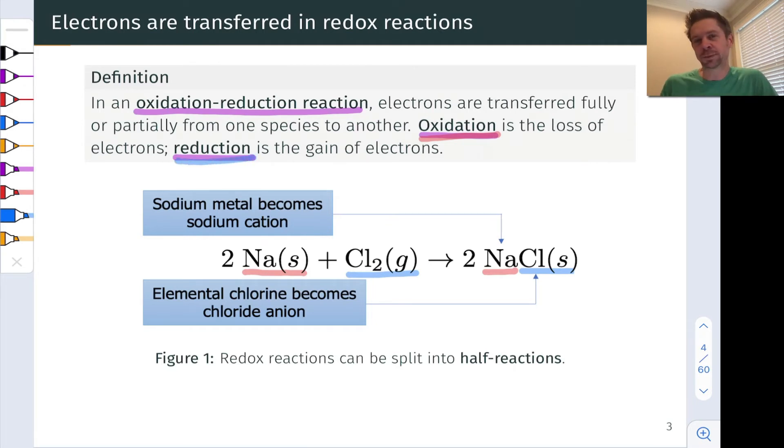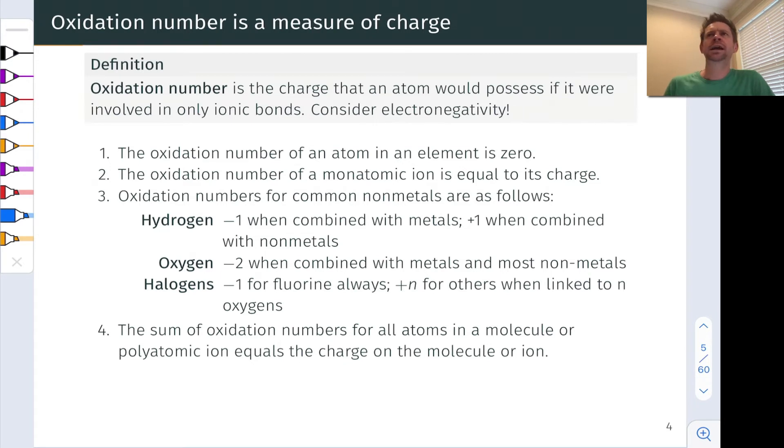Now let's formalize these terms a little bit more by defining oxidation number or oxidation state. So oxidation number is a way of defining the charge on an atom, similar in spirit to formal charge, but with a different strategy for thinking about how we distribute electrons to assign a charge. Oxidation number is specifically defined as the charge that an atom would possess if it were involved in only ionic bonds. So what we do with any covalent bonds is we give both electrons in the bond, say it's just a single bond, although this works for double and triple, we give all of the electrons in that bond to the more electronegative atom. That's why you're prompted here to consider electronegativity. The charges that result after we do that are the oxidation numbers.